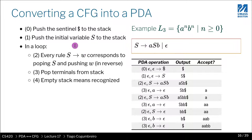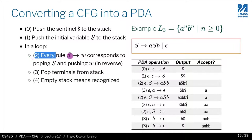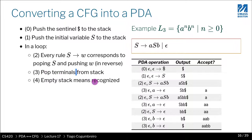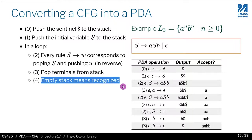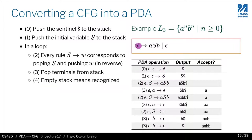So the strategy is: first push the sentinel dollar sign onto the stack, then push the initial variable. Then in the loop you have steps two, three, and four happening non-deterministically depending on what's on the stack. If you have a variable on top, you execute a rule. If you have a terminal, you pop it and read the input. If the stack is empty, you've accepted.